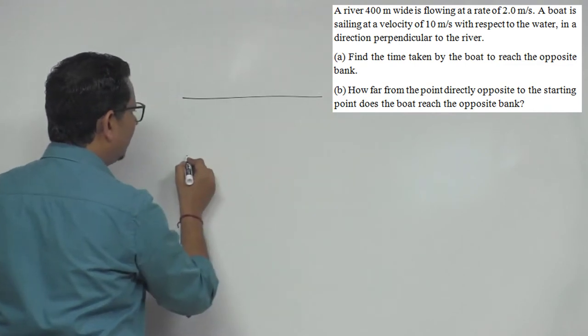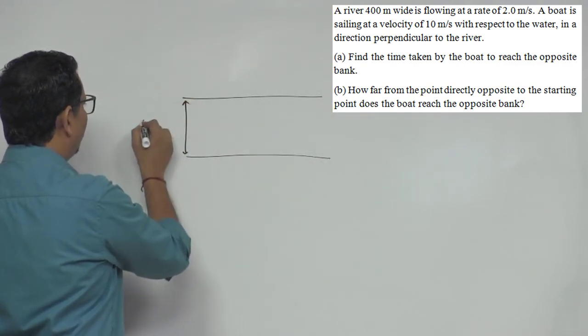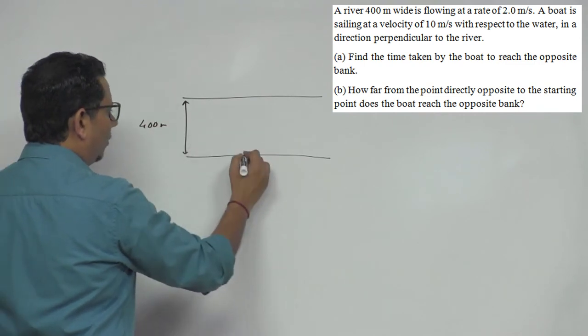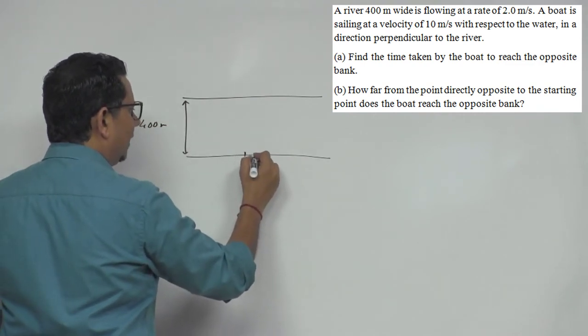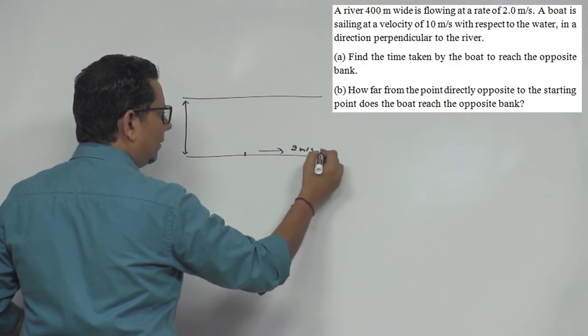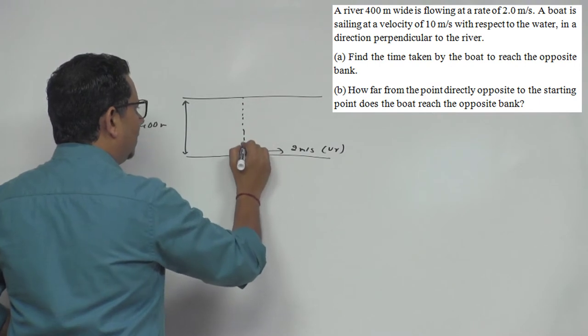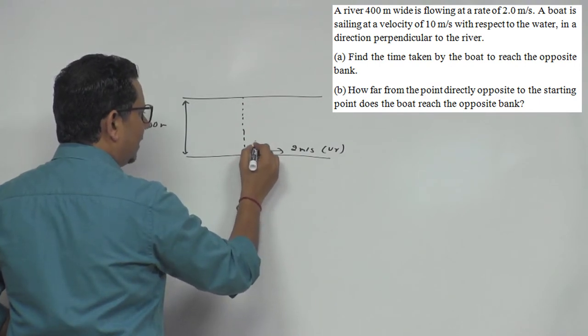This is a simple problem. The scenario is: the river is 400 meters wide, and the boat starts from here. The river is flowing in this direction at 2 meters per second - that's the velocity of the river. And the boat is traveling directly at 90 degrees angle.